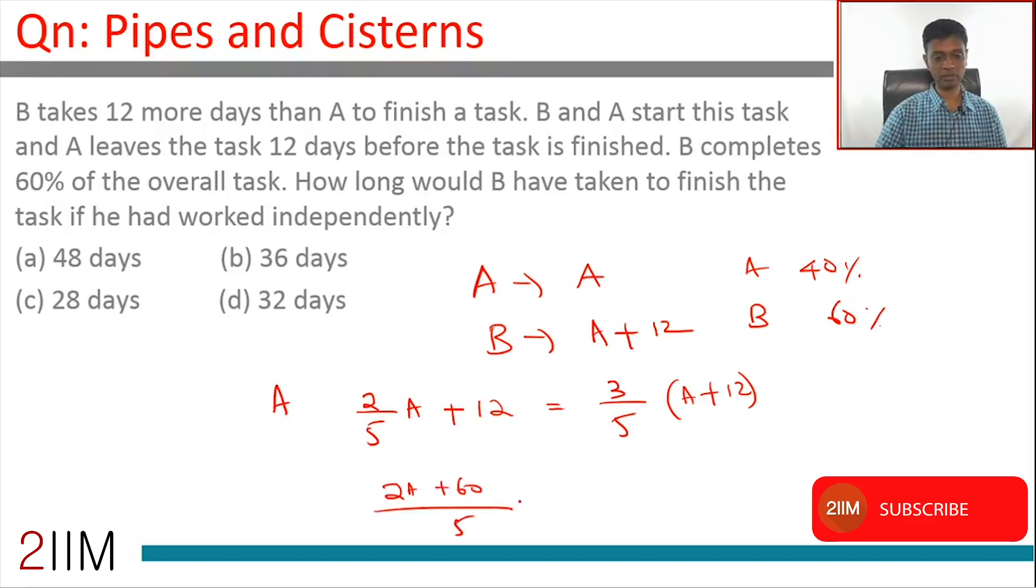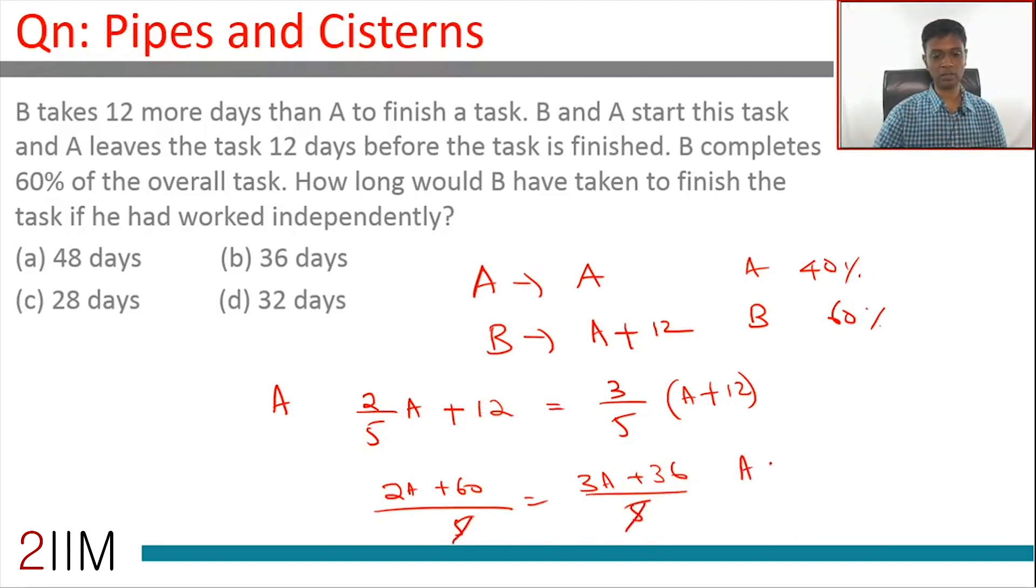So (2a + 60)/5 equals (3a + 36)/5. The 5 goes off, we have a equals 24 days, or A takes 24 days to finish the task. B would take 36 days to finish the task.